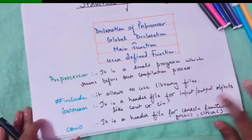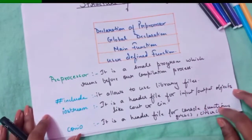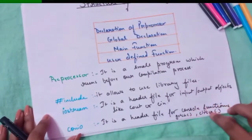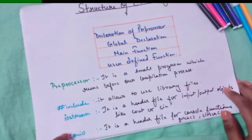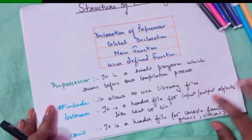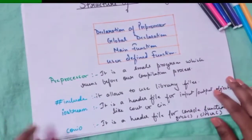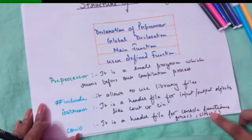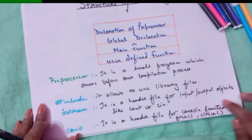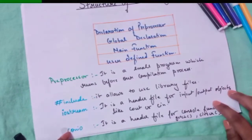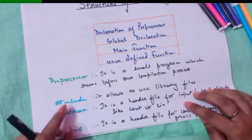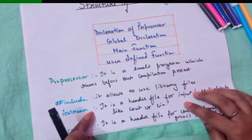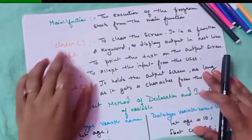We also have conio — it is a header file for console input/output functions, for example `getch()` and `clrscr()`. Whenever we want to use `getch()` or `clrscr()`, we must include the conio header file. And if we want to use input/output operations, we include the iostream header file.